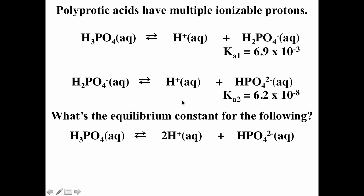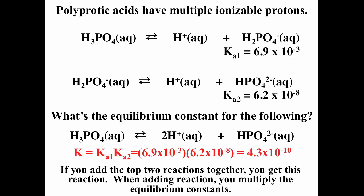An interesting question is: what is the equilibrium constant for the reaction where we start with H₃PO₄ with three acidic hydrogens and remove two of them? You can imagine this happens in steps — remove the first, then remove the second. If we add those two reactions together, we get the overall reaction. Remember: if you multiply a reaction by a number, raise the equilibrium constant to that power; if you swap products and reactants, take the inverse; and if you add two reactions, multiply the corresponding equilibrium constants. So Ka1 × Ka2 = 6.9 × 10⁻³ × 6.2 × 10⁻⁸ = 4.3 × 10⁻¹⁰, and that is the equilibrium constant for the combined reaction.